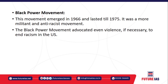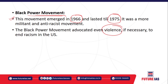The black power movement emerged in 1966 and lasted until 1977. It was a militant movement with anti-racist elements — an assertion of black identity and equality in terms of races. The black power movement advocated violence as necessary to end racism in the US, as justified by its promoters.